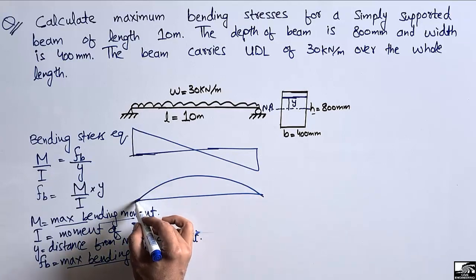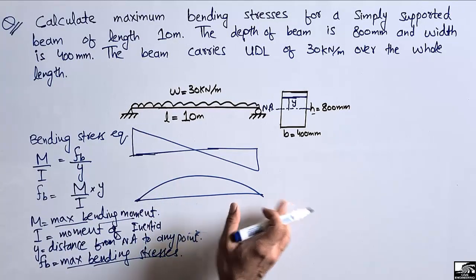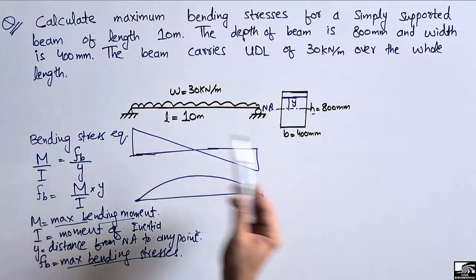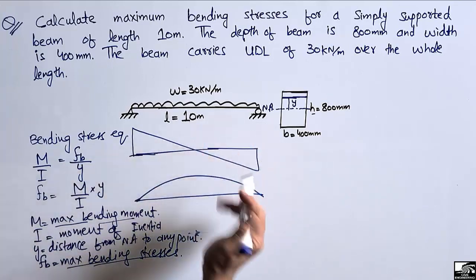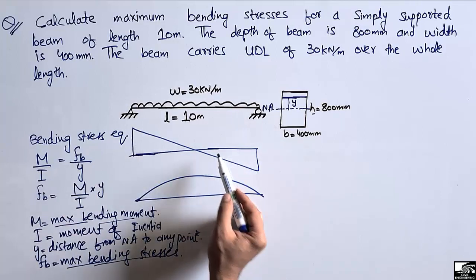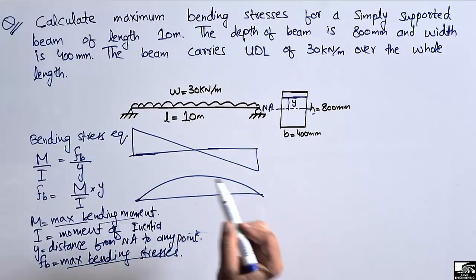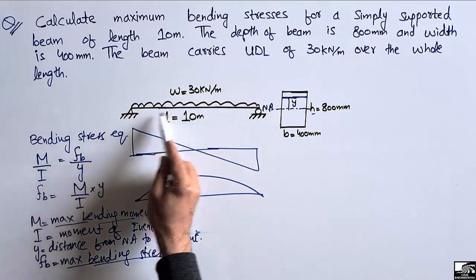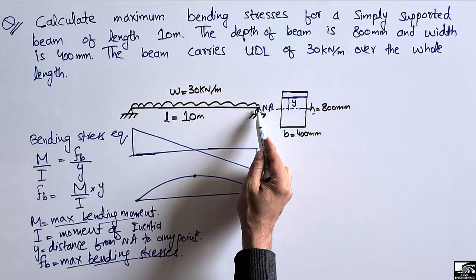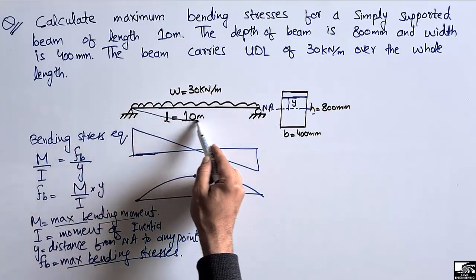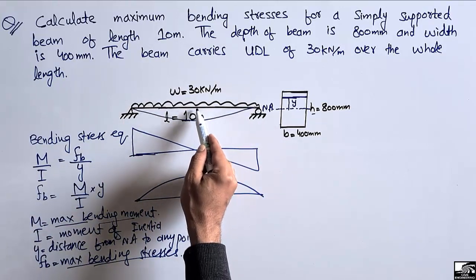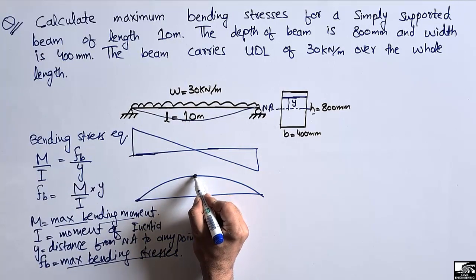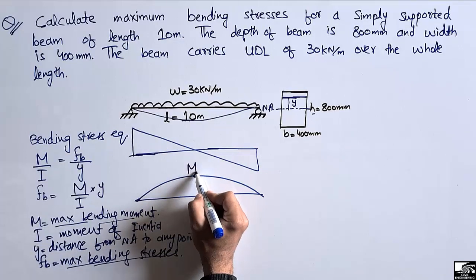I have uploaded many videos about shear force and bending moment diagrams, which you can watch for different beam types. For a simply supported beam with a uniformly distributed load, the maximum bending moment occurs at the midpoint of the beam, where maximum deflection also occurs.